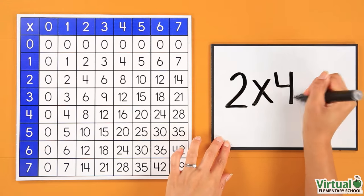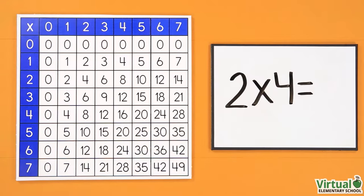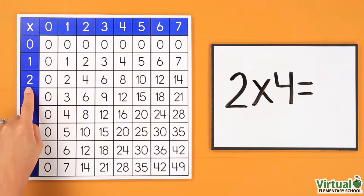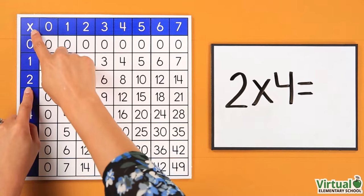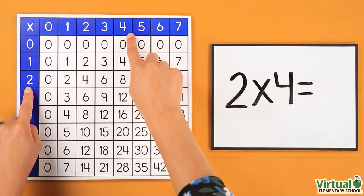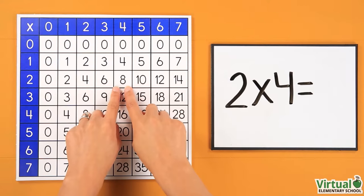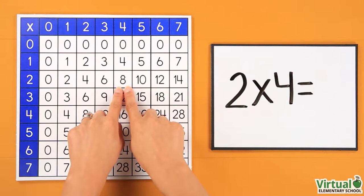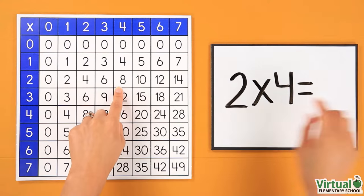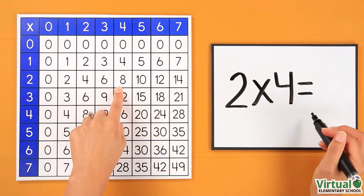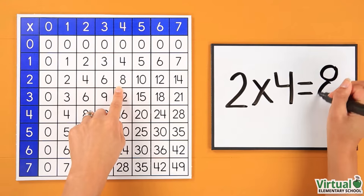What is 2 multiplied by 4? First, find the number 2 in the first column. Next, find the number 4 in the first row. Then, move across the row and down the column until meeting at the answer, 8. This means that 2 multiplied by 4 equals 8.